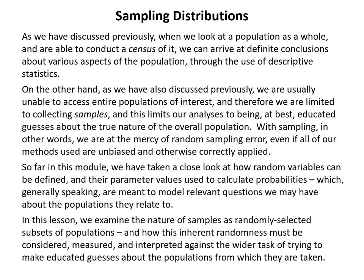When we look at a population as a whole and conduct a census, we can arrive at definite conclusions through descriptive statistics. However, we are usually unable to access entire populations and therefore are limited to collecting samples, which limits our analyses to being at best educated guesses about the true nature of the overall population. With sampling, we are at the mercy of random sampling error, even if all methods used are unbiased and correctly applied.